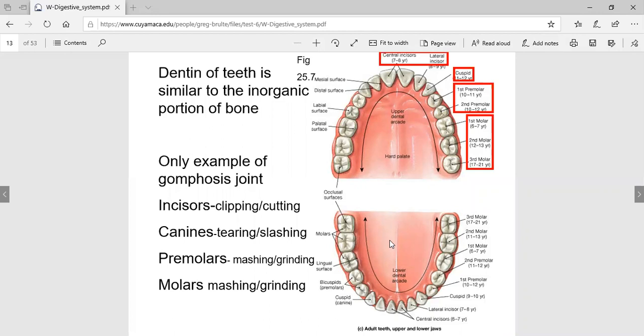This is pretty much where we were. Don't forget these are molars, these are premolars or bicuspids, that's a cuspid or canine, and these are incisors. That's about all I'm going to ask you.